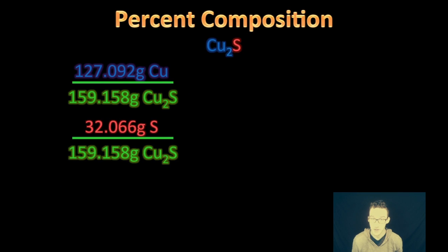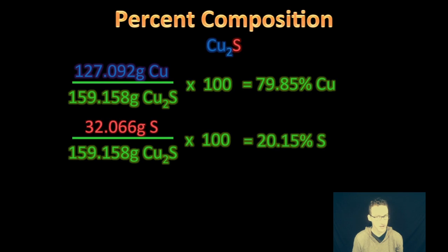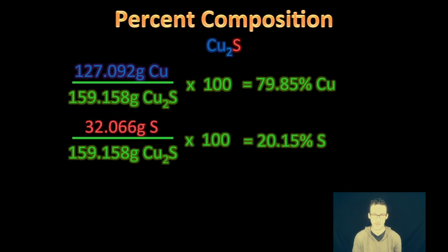And so as we look at the math to solve for what the percent composition by mass is for this compound, it's just the mass of the part divided by the mass of the whole compound. And if you take a look at how that works out for copper, 127 grams over the total mass of the compound, approximately 159 grams, times 100 gives you about 80% by mass of this compound is copper.